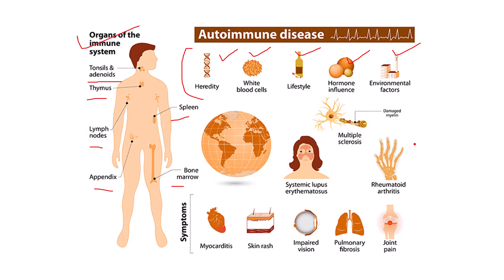Let's see a few examples of autoimmune diseases: multiple sclerosis, systemic lupus erythematosus, and rheumatoid arthritis. A few symptoms include joint pain, pulmonary fibrosis, impaired vision, skin rash, and myocarditis.